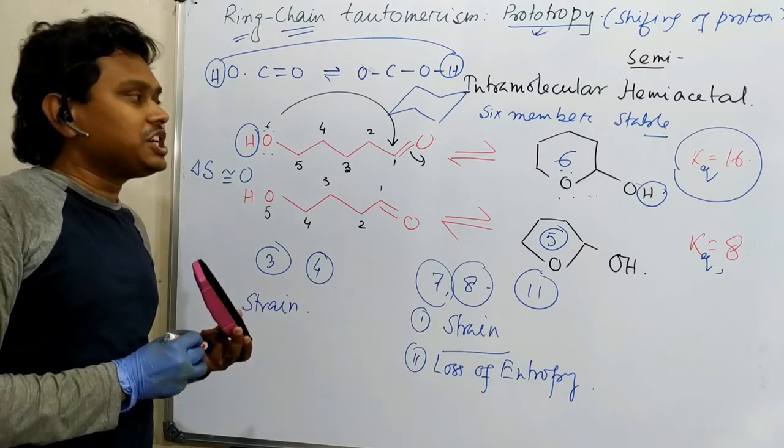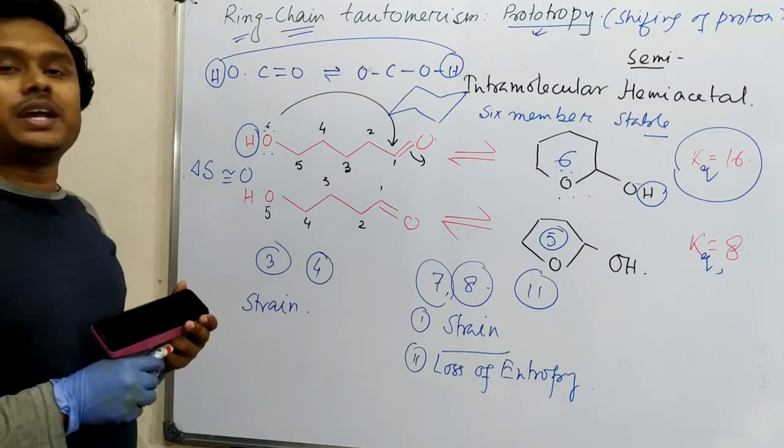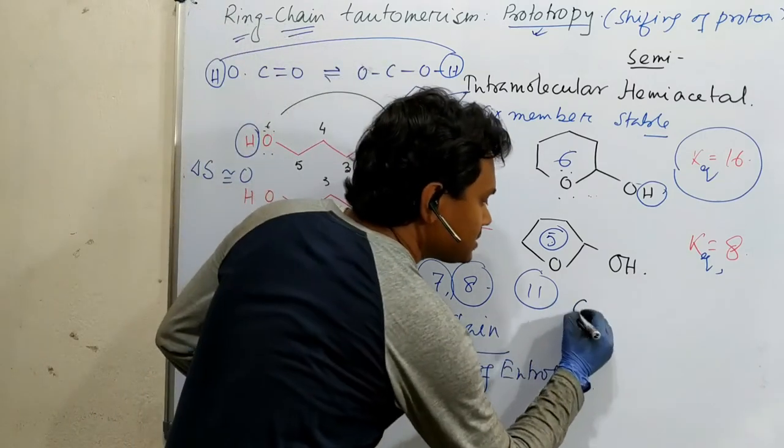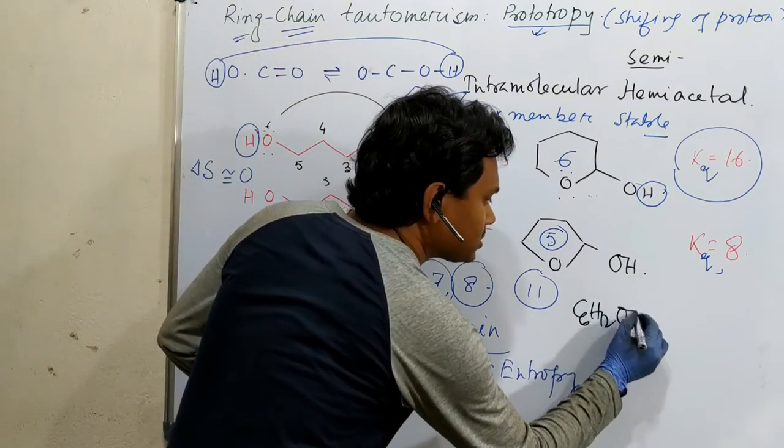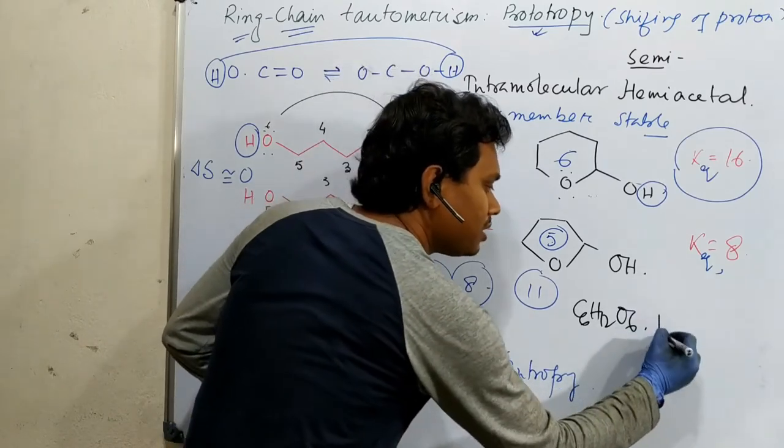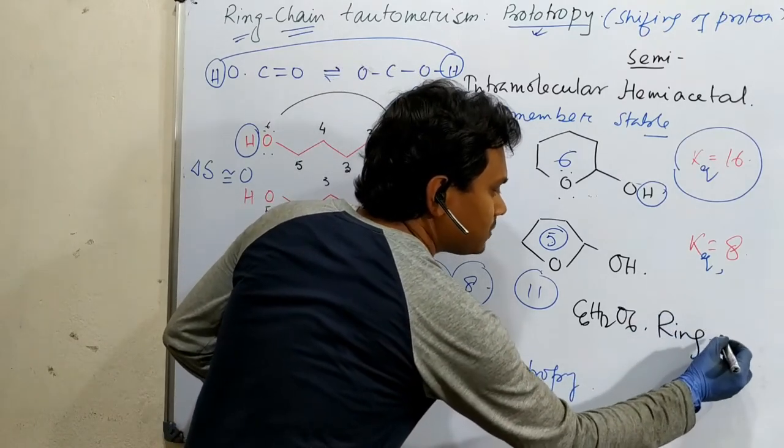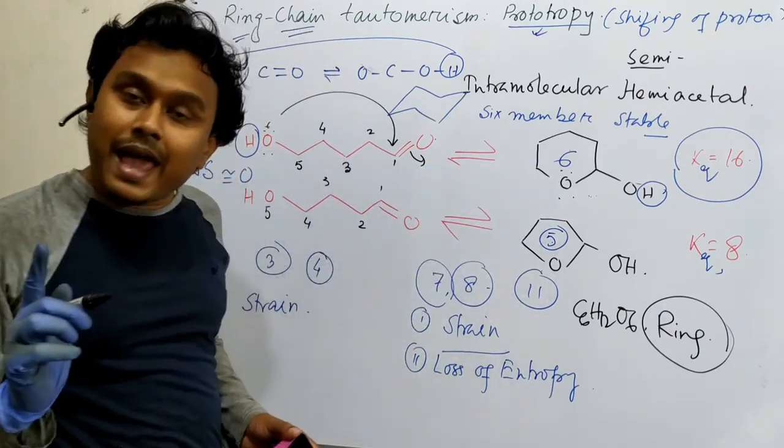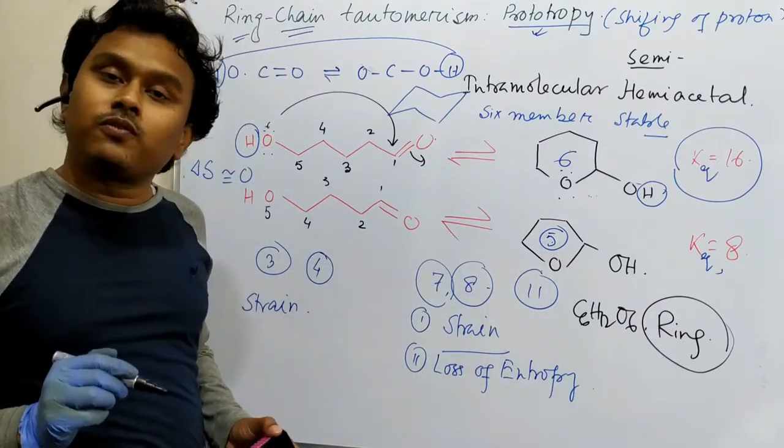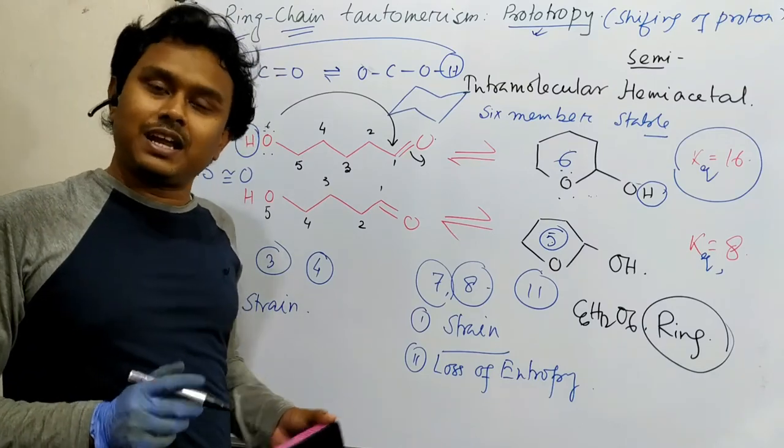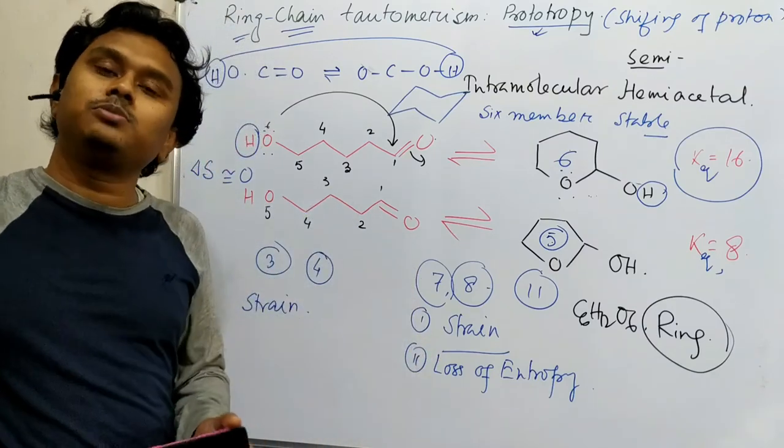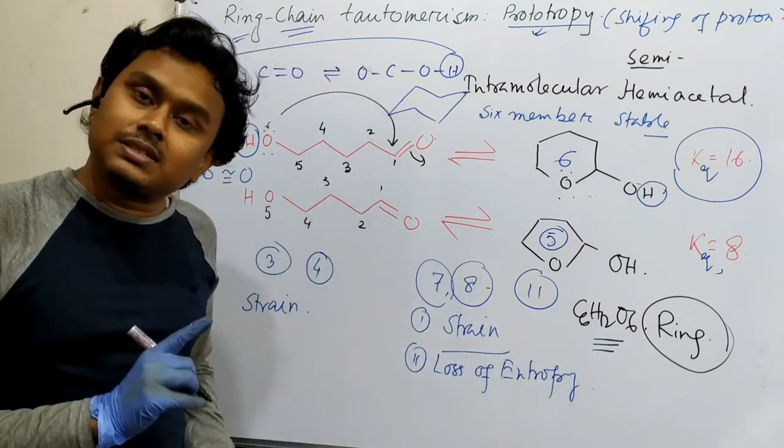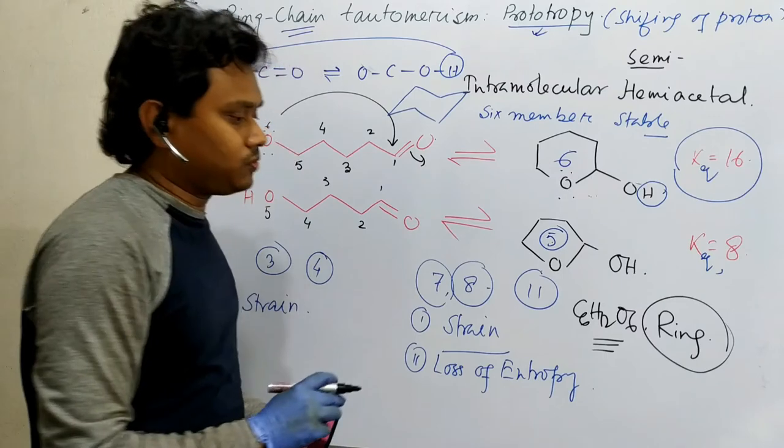So, what is the application of this theory? See, carbohydrates. Carbohydrates, they are, so actually, you see, carbohydrates, C6H12O6, they prefer to remain in ring form, not chain form. Why? Because, they can do this ring chain, tautomerism. Actually, the aldehyde group of carbohydrate, doesn't remain in aldehyde, either hemiacetal, or if it is polymer, it is acetal. So, this is the application, of this ring chain, prototropism.